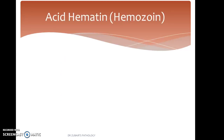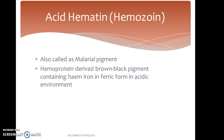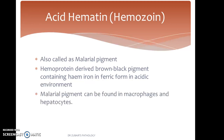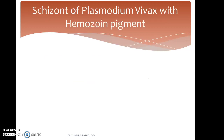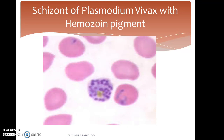Hemozoin, also called malarial pigment, is a hemoprotein-derived brown-black pigment containing heme iron in ferric form in an acidic environment. Malarial pigment can be found in macrophages and hepatocytes. Here we find a schizont of Plasmodium vivax with the hemozoin pigment. You can appreciate the brown pigment, and both stages — trophozoites as well as ring forms — are seen. The diagnostic feature is the brown pigment, which helps in making a diagnosis.